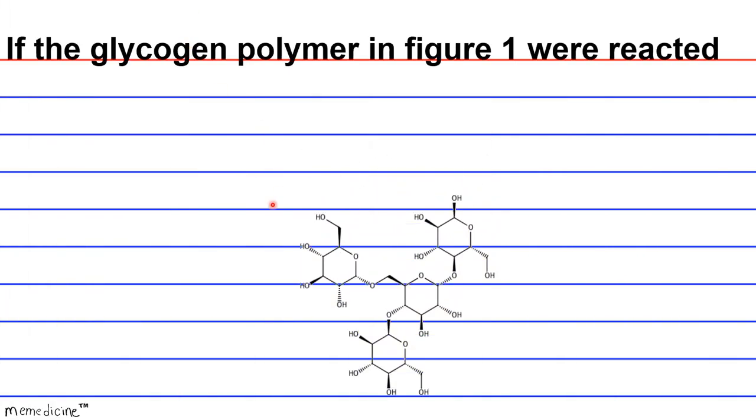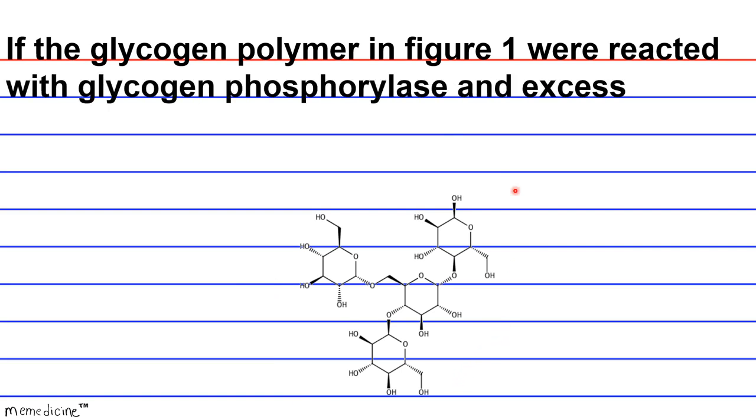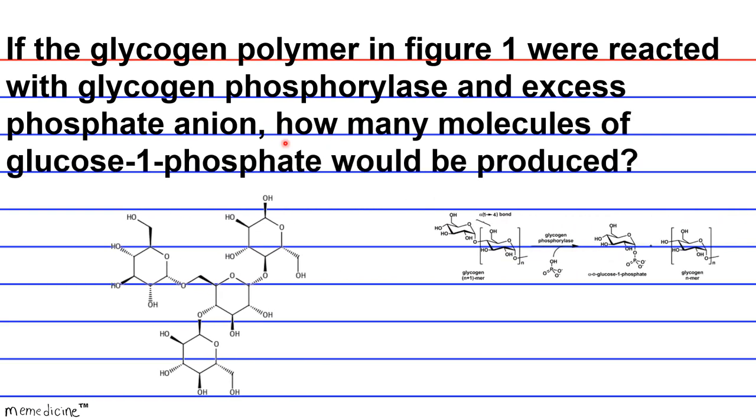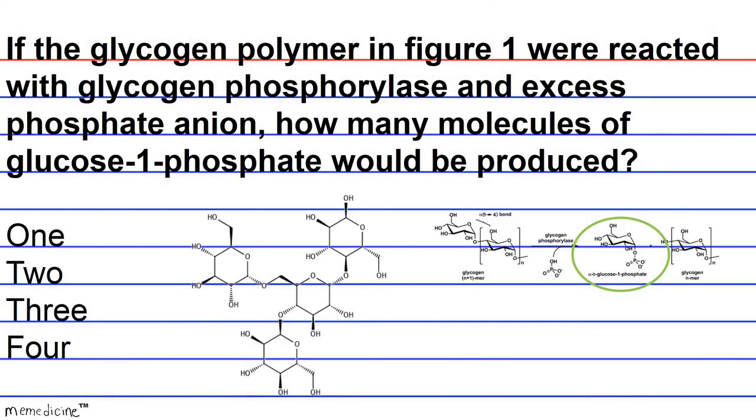If the glycogen polymer in figure 1 were reacted with glycogen phosphorylase and excess phosphate anion, how many molecules of glucose 1-phosphate would be produced? A, 1, B, 2, C, 3, or D, 4? Outside knowledge is required for this answer, or you could deduce it based on the evidence in the passage.